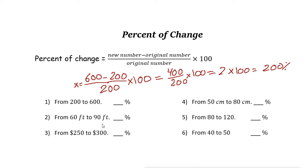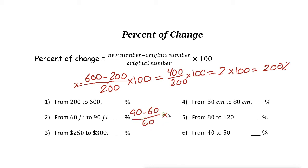Next example: 60 feet to 90 feet. The new number is 90, so 90 minus 60 over 60 times 100. 90 minus 60 is 30. 30 divided by 60 is one half. One half times 100 is 50. So the answer here is 50 percent.